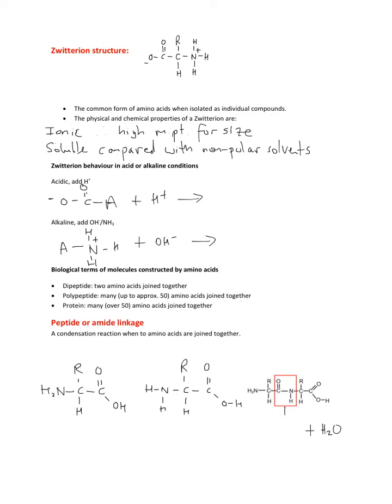Next, we'll look at zwitterions. Zwitterions are a structure of the amino acids where the hydrogen has been transferred over to the ammonia, so the amine functional group. They naturally occur, and this is the common state of amino acids in their solid form when they've been separated. This leads to some physical properties which are different to a simple molecule of their size. They have very high melting points compared to other simple molecules because they are ionic. And they are also very soluble compared to non-polar solvents such as ethers because they are ionic, so they interact very easily with water.